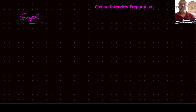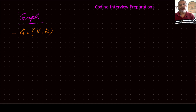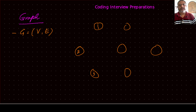The next issue to look at is another data structure called a graph. A graph is basically made up of two things: a set of vertices and a set of edges. We can represent vertices or nodes graphically and number them. These are the vertices.